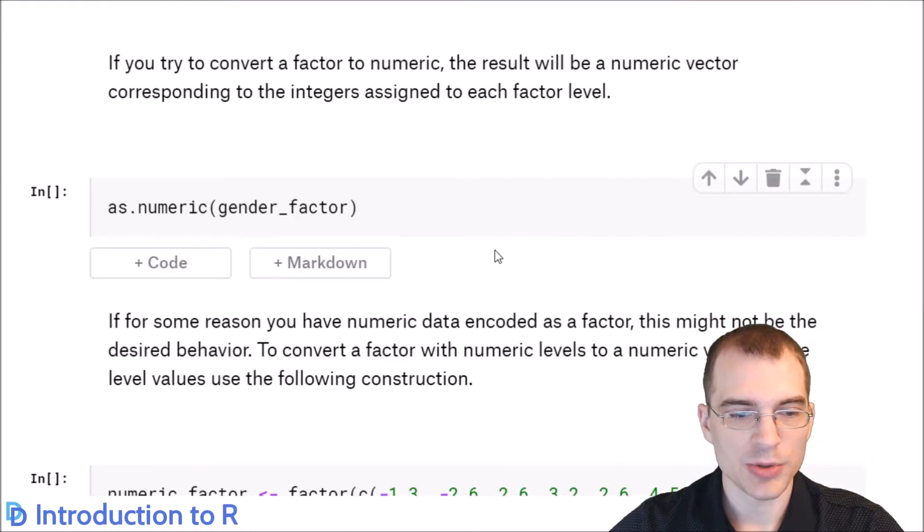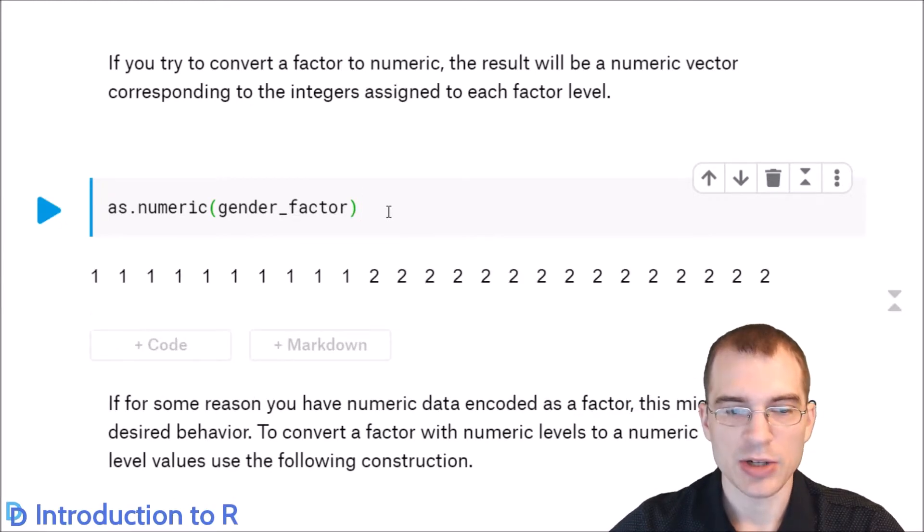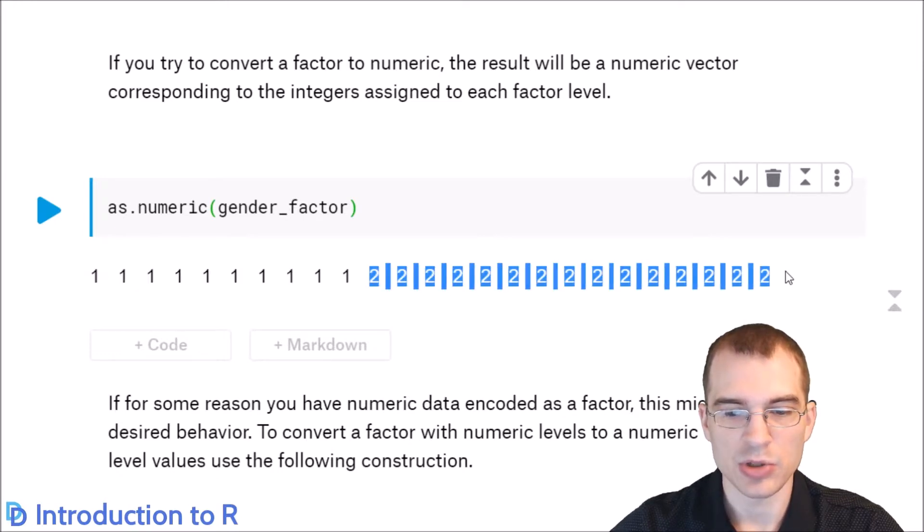You can also convert a factor to numeric if you happen to have numeric values in a factor for some reason. But when you do this, we'll run it here. When you do this, you're actually given the index values, the integer index values, instead of whatever actual numeric values might be stored there. So here we're given 1, 1, 1, 1, because male is associated with the first index value, 1. And then all these 2s are all the female.